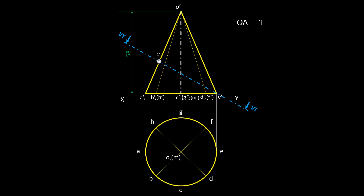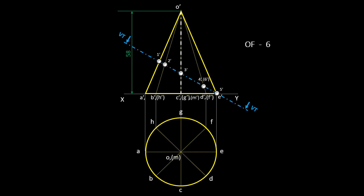The section plane meets generator OA at point 1. Generator OB is visible and OH is hidden, so let's name the visible edges first. The section plane meets OB at point 2, OC at point 3, OD at point 4, and OE at point 5. Now the visible edges are done. Moving to the hidden lines: hidden generator OF at point 6, OG at point 7, and OH at point 8.